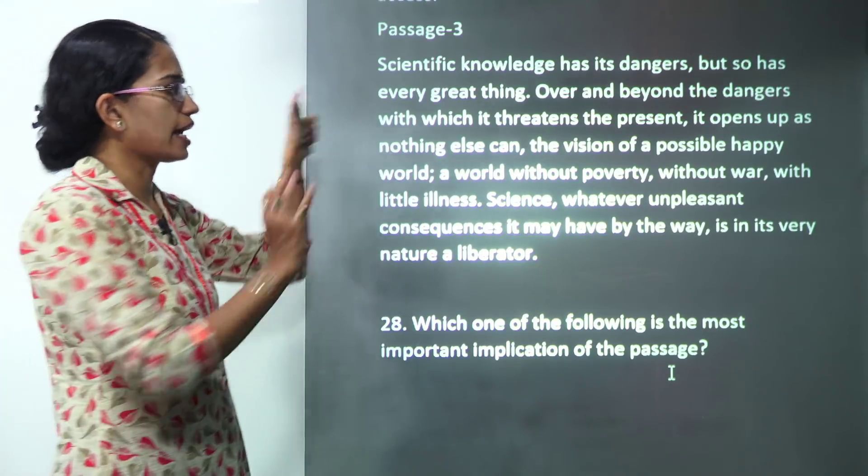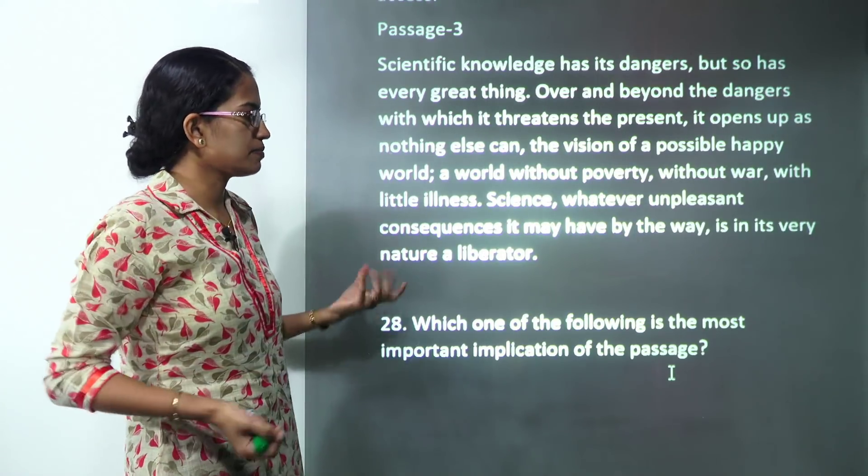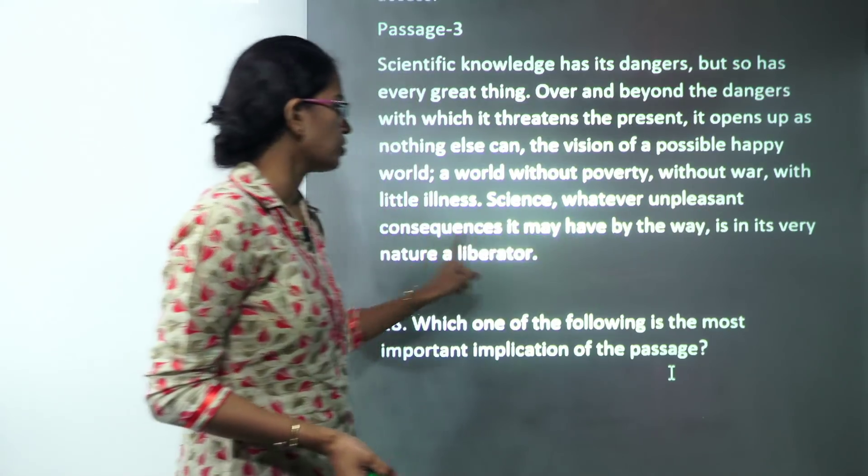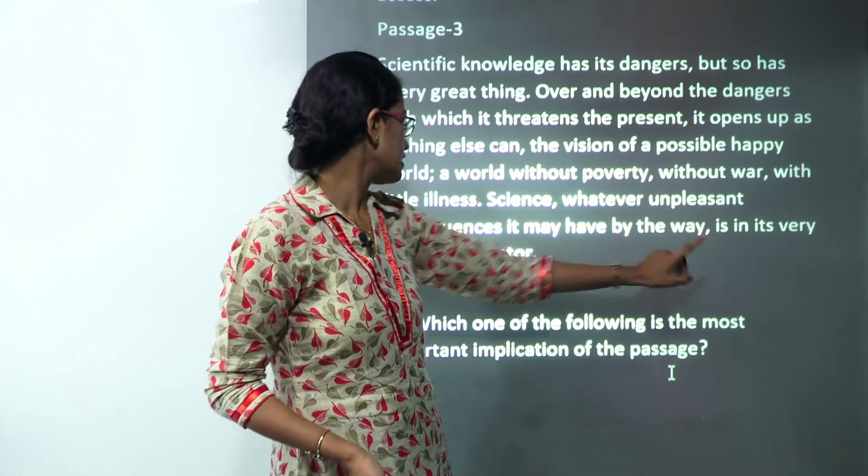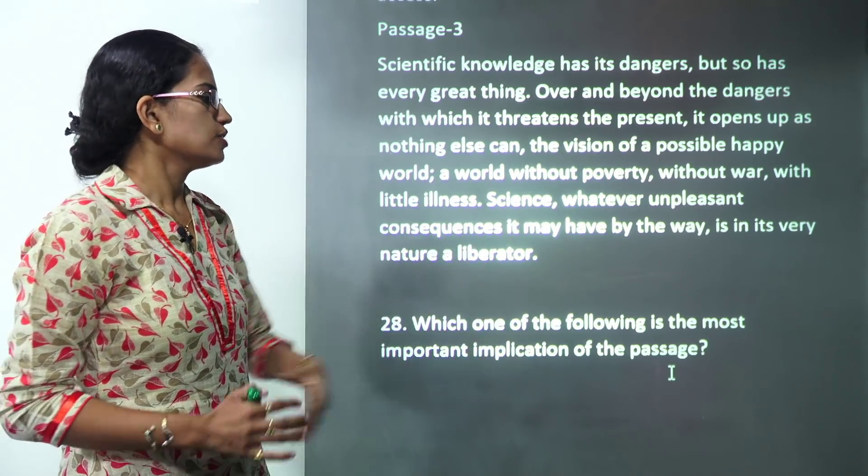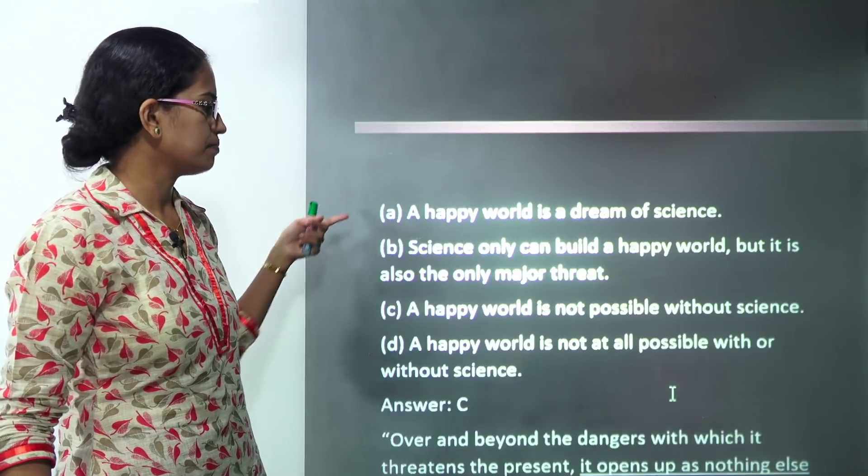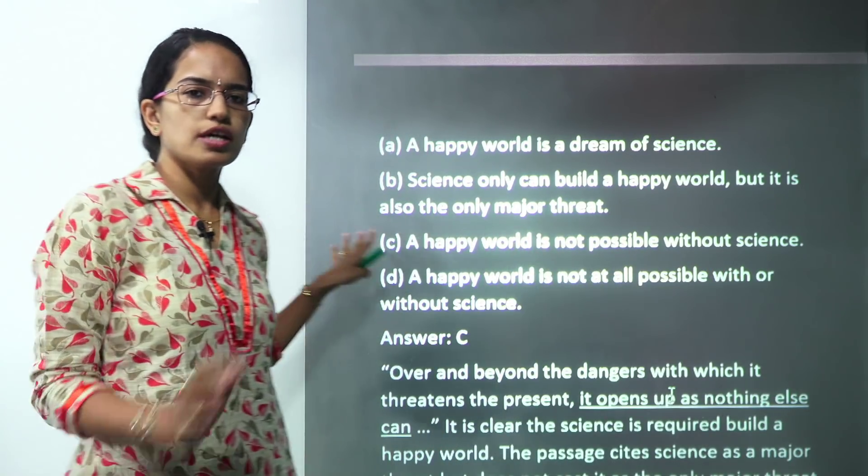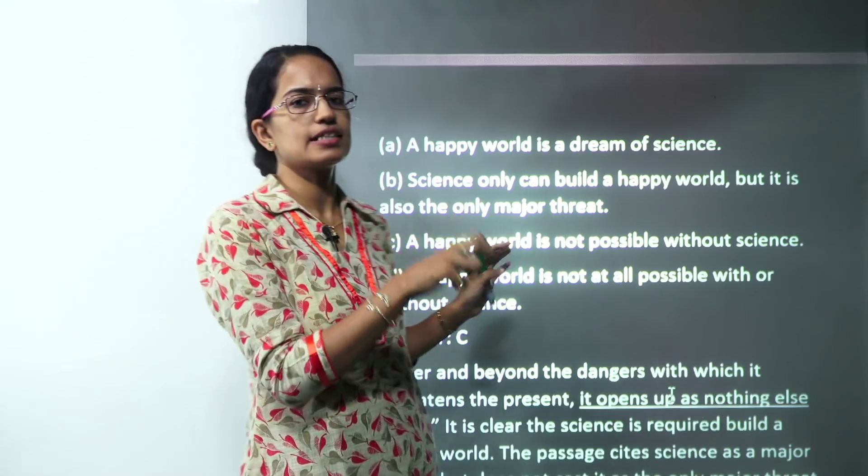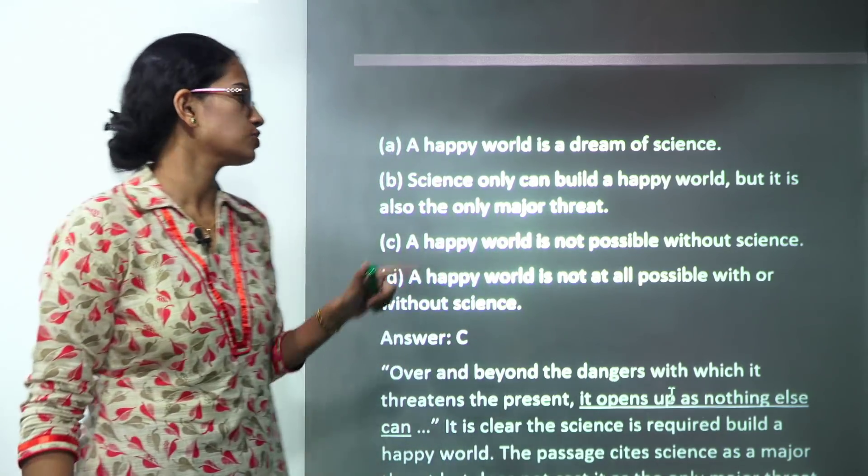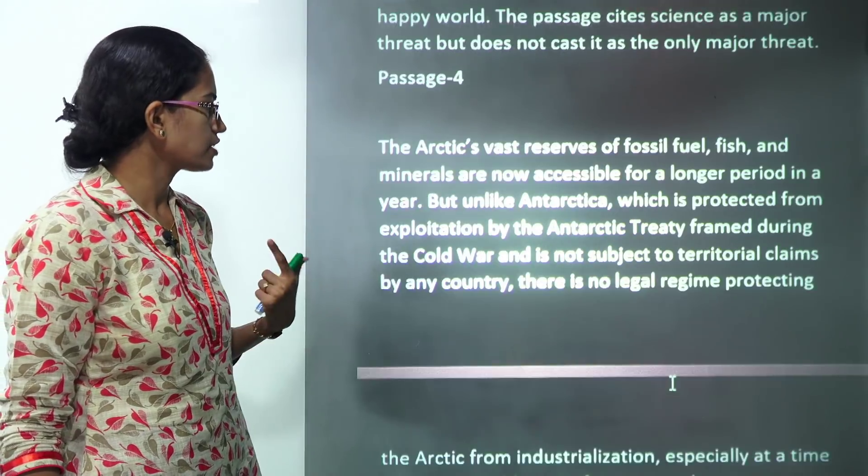The next passage is on scientific knowledge. From the last line you can interpret: Science whatever unpleasant consequences it may have, it is by its very nature a liberator. So it talks about the passage implies a happy world is not possible without science. The author who is writing this passage is pro-development for science. So you have C as the correct option here.